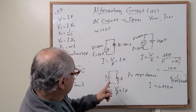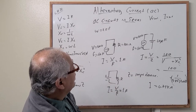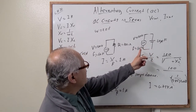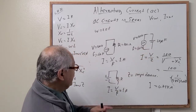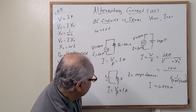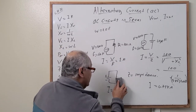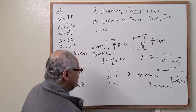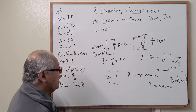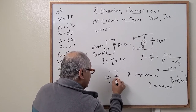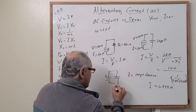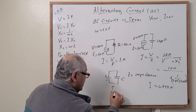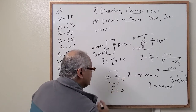What about for a capacitor connected to a battery? In that case, for DC, the current equals zero, because a capacitor blocks DC current.